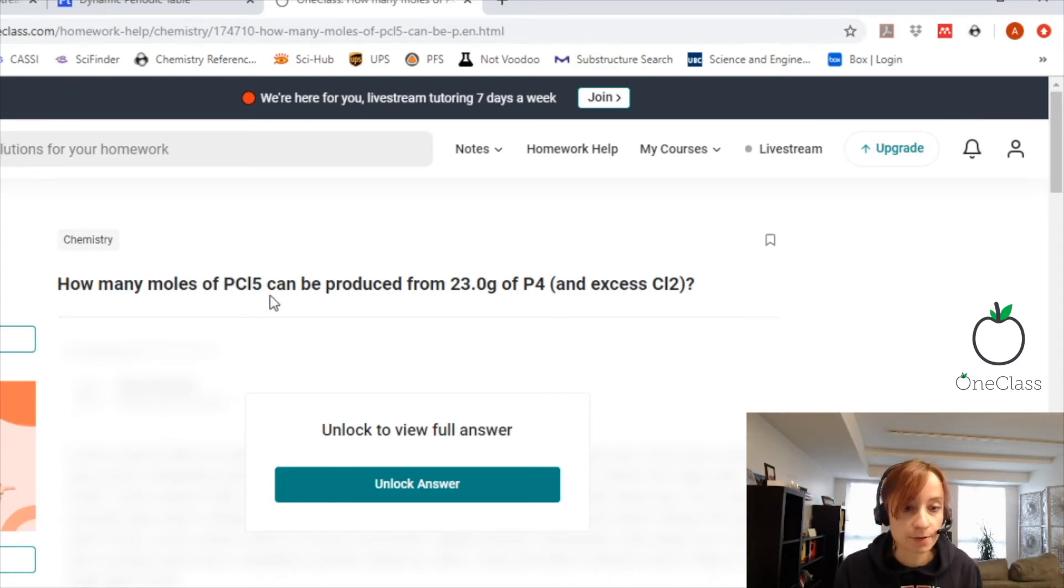How many moles of PCl5 can be produced from 23 grams of P4 with excess Cl2?